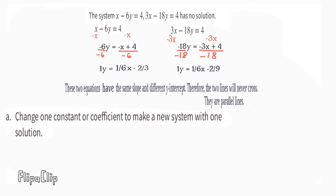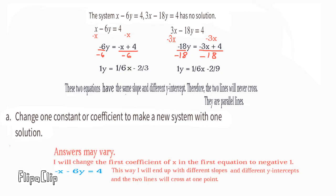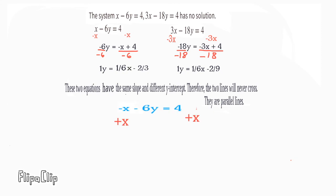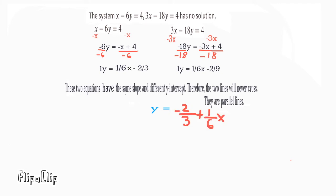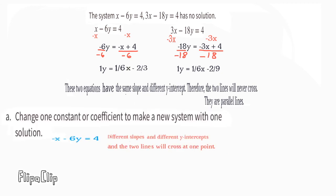Part A: change one constant or coefficient to make a new system with one solution. I will change the first coefficient of x in the first equation to negative 1, giving different slopes and different y-intercepts so the two lines will cross at some point. Writing it in slope-intercept form by adding x to both sides and dividing both sides by negative 6, the equation reads y equals 1/6 x minus 2/3. Different slopes and different y-intercepts means the two lines will cross at one point.